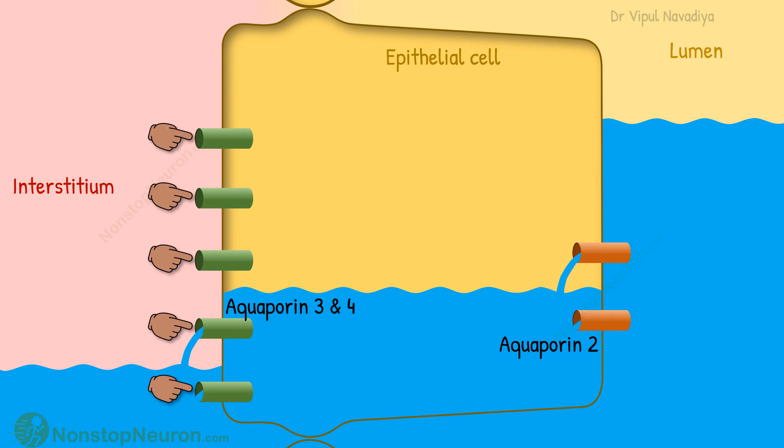Aquaporin-3 and aquaporin-4 are always present abundantly on the basolateral membrane, so they are always ready to transport whatever quantity of water is there inside the cell. But the limiting factor for reabsorption is the quantity of aquaporin-2 on the apical membrane.